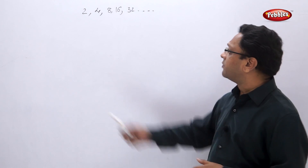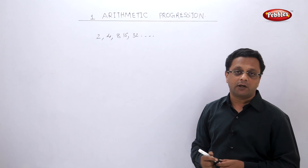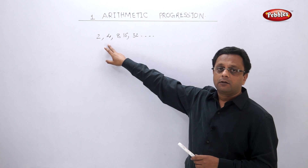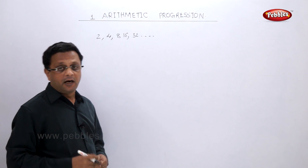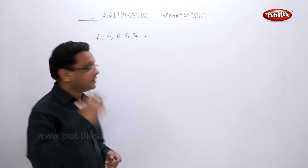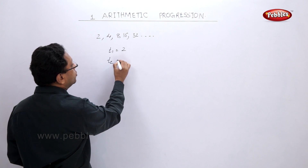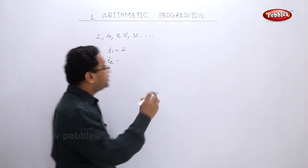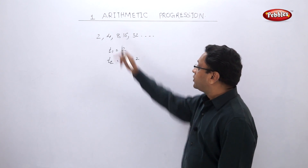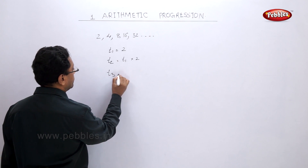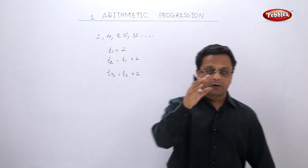Let us consider one very simple sequence: 2, 4, 8, 16, 32. Every number is the double of the preceding one. Now let us see how to write the formula for the Tn term. T1 equals 2. T2 equals T1 multiplied by 2. T3 equals T2 multiplied by 2. So there is one definite rule: each term is twice the previous one.